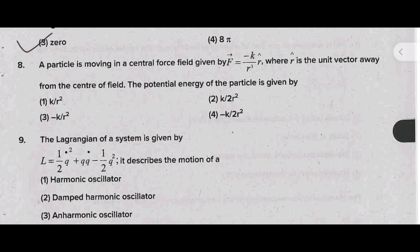Next, a particle is moving in a central force field given by F equal to minus K by R cube into R cap, where R cap is a unit vector away from the center of the field. The potential energy of the particle is given by - the correct answer is minus K divided by 2R square.